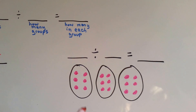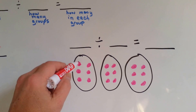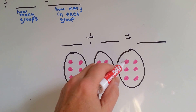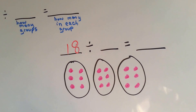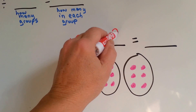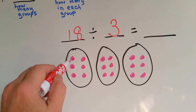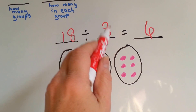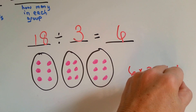Let's try this one. What's the total number? 1 through 20. How many groups? 1, 2, 3. How many are in each group? 1, 2, 3, 4, 5, 6. 18 divided by 3 equals 6. Because 6 times 3 equals 18.